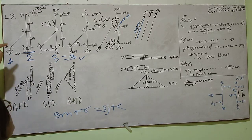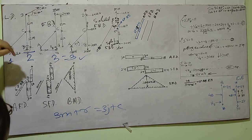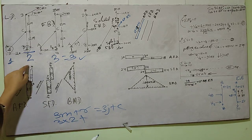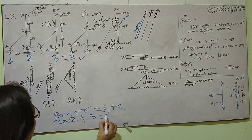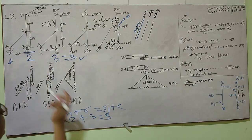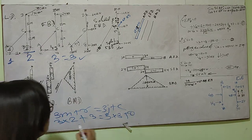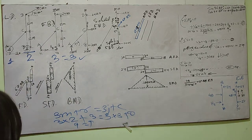The number of members is two - AC and BD. So 3 times 2, and as I mentioned, reactions are 2 plus 1, which is 3. The number of joints is 1, 2, and 3, so 3 times 3. There are no conditional equations, so it is 0. Therefore, 9 equals 9, confirming this structure is statically determinate.